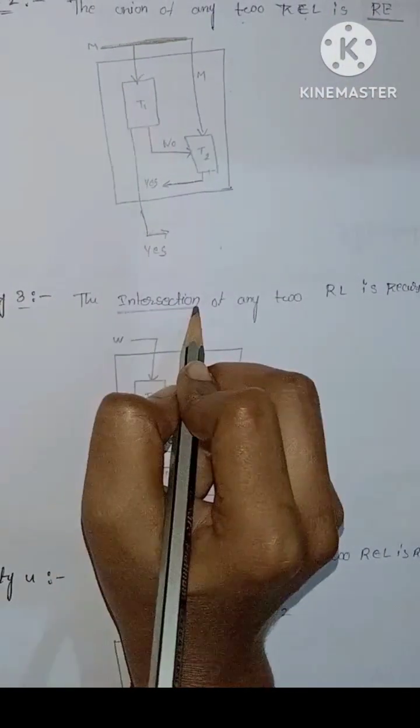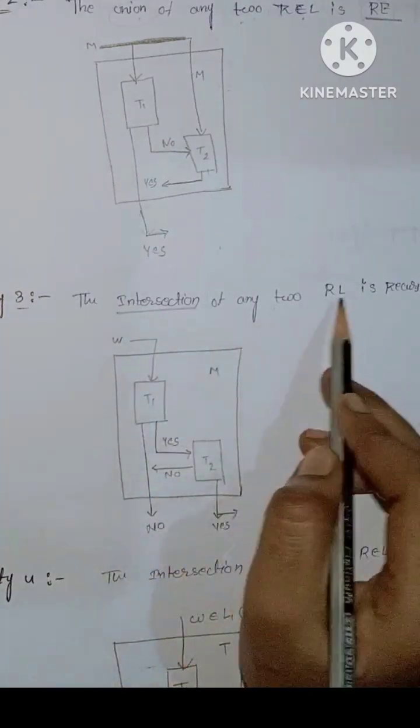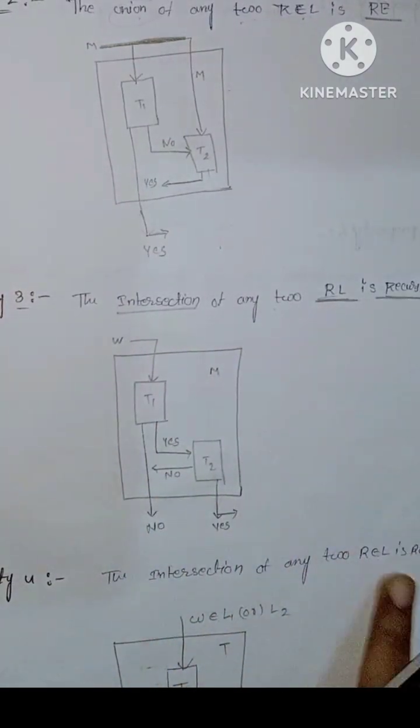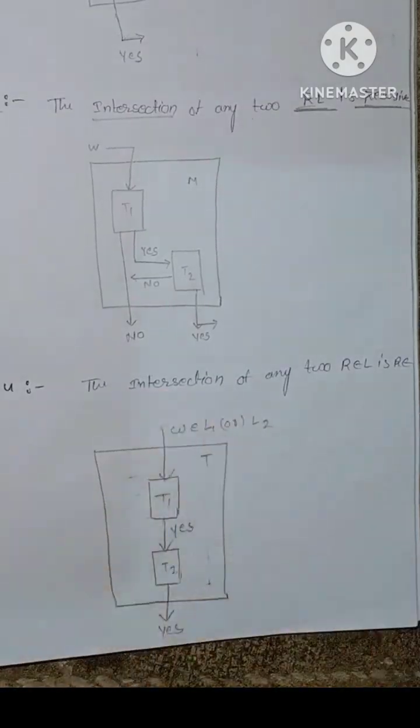Next is intersection. The intersection of any two recursive languages is recursive. For recursive enumerable language, the intersection of any two recursive enumerable languages is recursive enumerable.